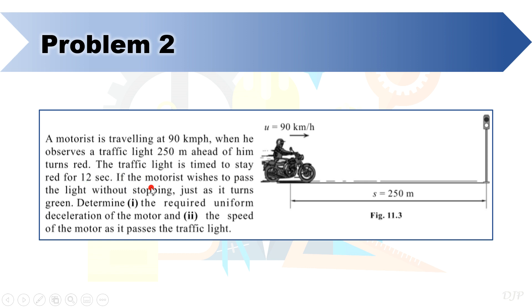Before we start outlining the given, required, and solution format, let's set first the location of the reference at the position where the motorist is just 250 meters away from the traffic light that he intends to pass. Also, let's set all vectors directed to the right as positive.